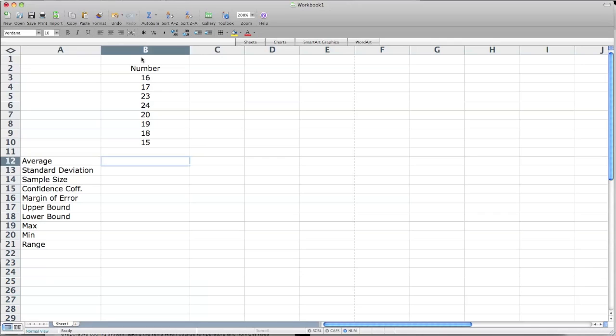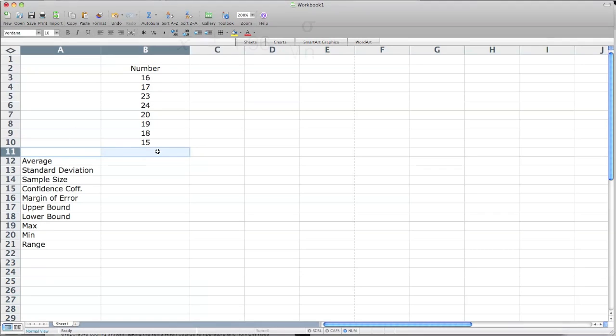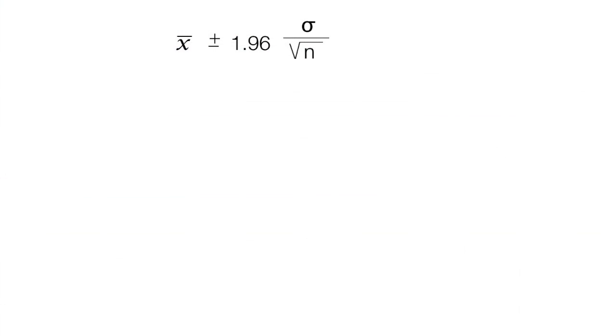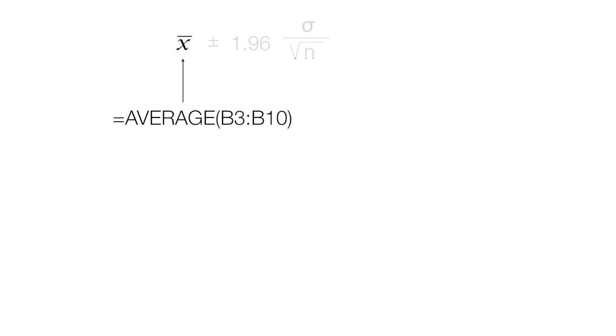This is my Excel spreadsheet. I have a row at the top, and I have a row at row 11. The first thing I'm going to calculate is average from B3 to B10, also known as the mean.